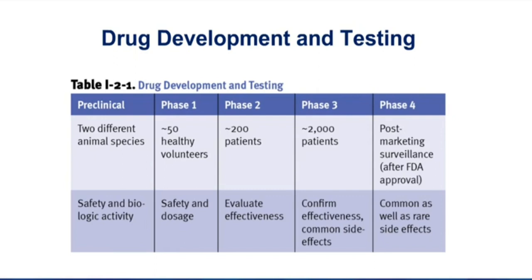When I think about phase one testing, phase one is done in healthy volunteers — people volunteer, and occasionally we will pay these folks to be a part of phase one trials. Since it's healthy volunteers, there's no way that you're testing for efficacy at this point. The only thing you can test in these healthy volunteers is safety and dosage. The purpose of phase one is to find a safe dosage to move on into phase two, and we're doing that in healthy people.